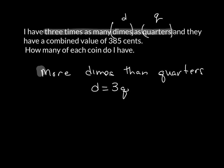Now, the next piece that we have here is a combined value. And whenever you're doing a value statement with any of these, you have to use the fact that you know the quarters are 25 cents and dimes are 10 cents. So therefore, it will equal the 385 cents.